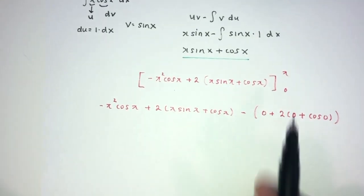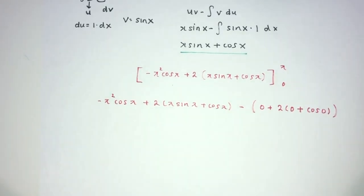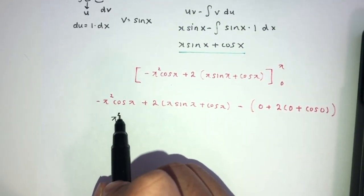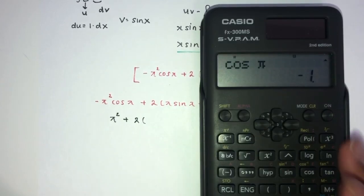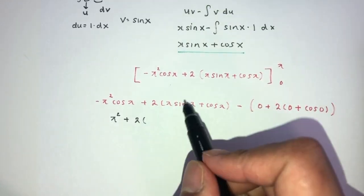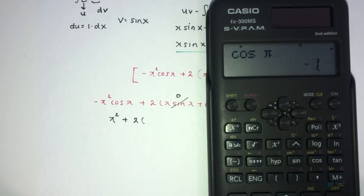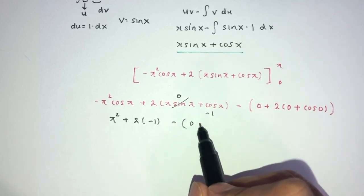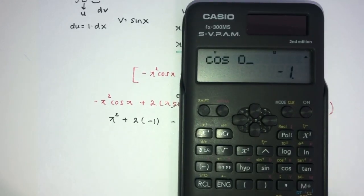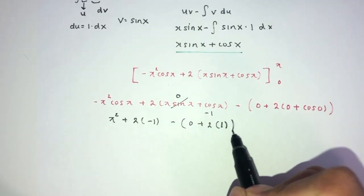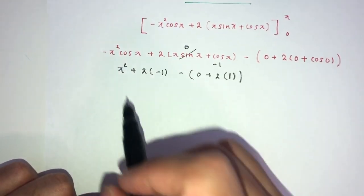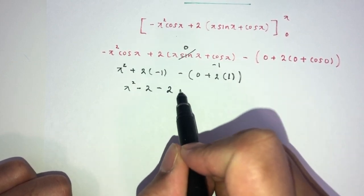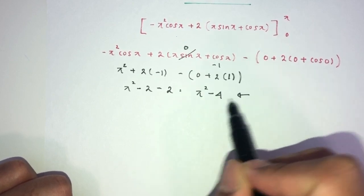Minus that, at 0: we have 0 plus 2 times [0 plus cos(0)]. We should know sin(0) is 0, so those terms are zero. Now simplify: cos(pi) is minus 1, so minus pi squared times minus 1 becomes positive pi squared. Then 2 times sin(pi) is 0, so that term is 0. Cos(pi) is minus 1, giving minus 1 there. For the lower limit, 2 times cos(0): cos(0) is 1, giving 2. So we have pi squared minus 2 minus 2, which is pi squared minus 4 as our answer. And this is shown as required — this is your question number 2.